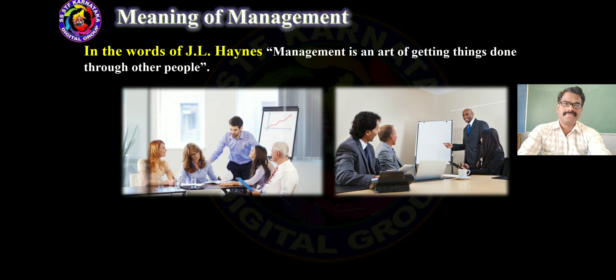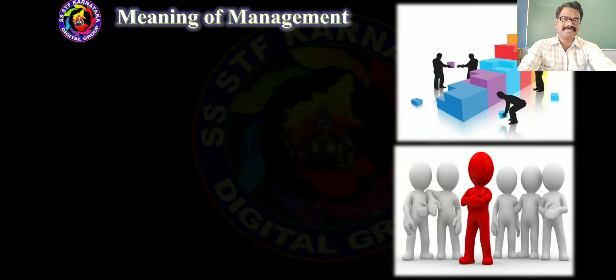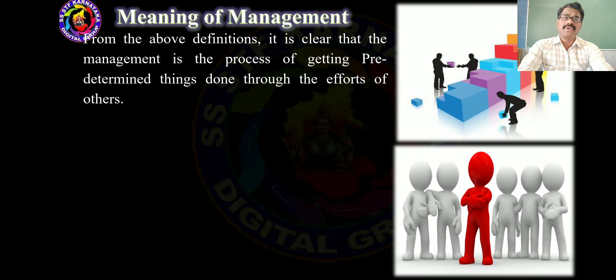In the words of J.L. Highness, management is an art of getting things done through other people. According to George R. Terry, management is a distinct process consisting of planning, organizing, actuating, and controlling performance to determine and accomplish the objectives by the use of people and resources. From the above definitions it is clear that management is the process of getting pre-determined things done through the efforts of others.